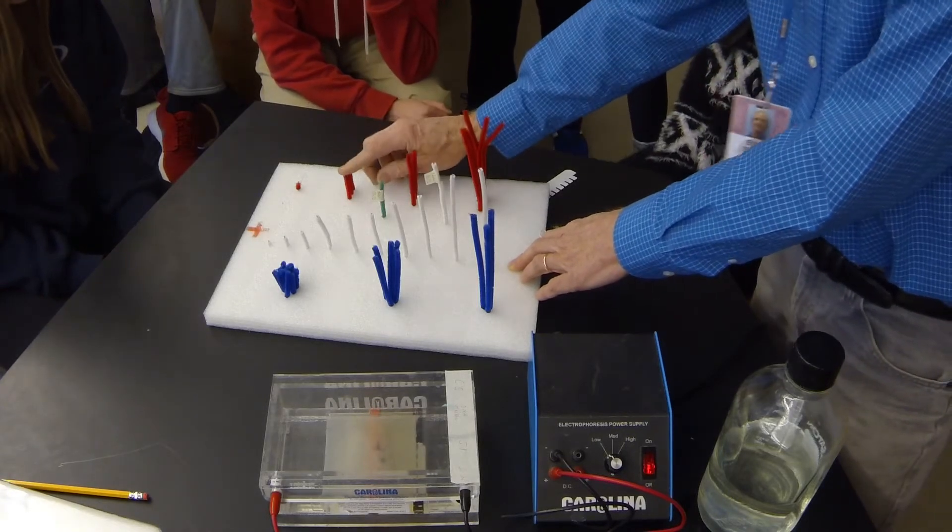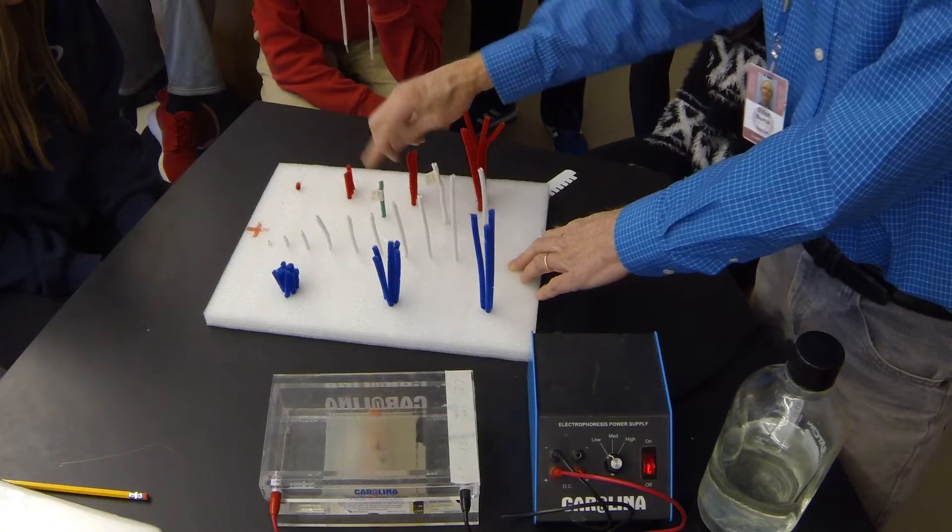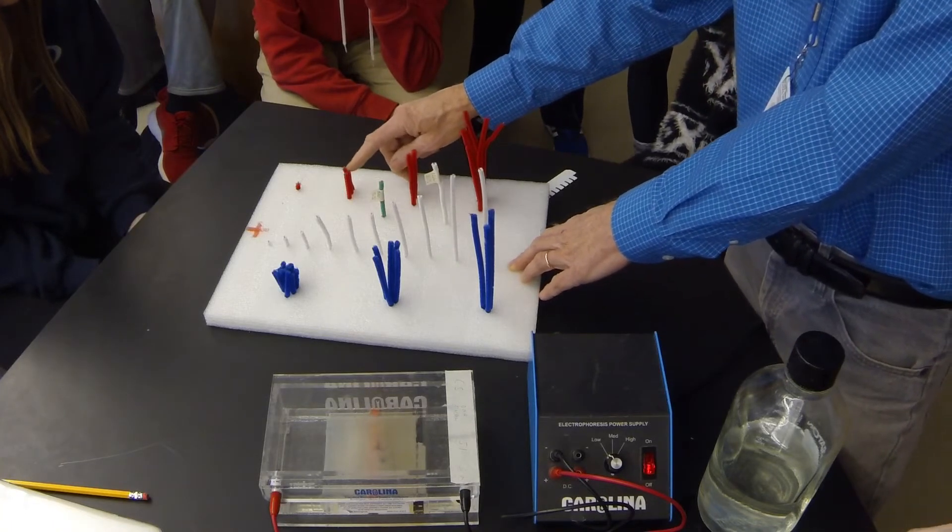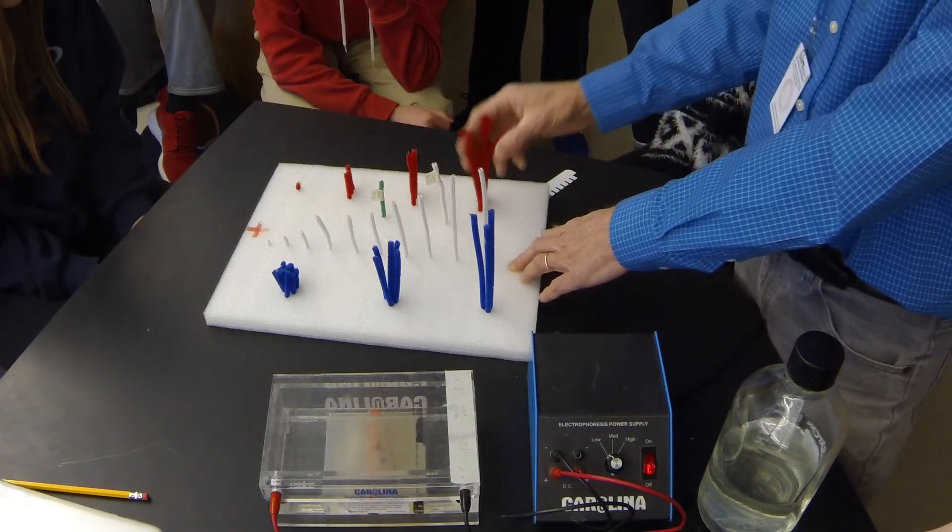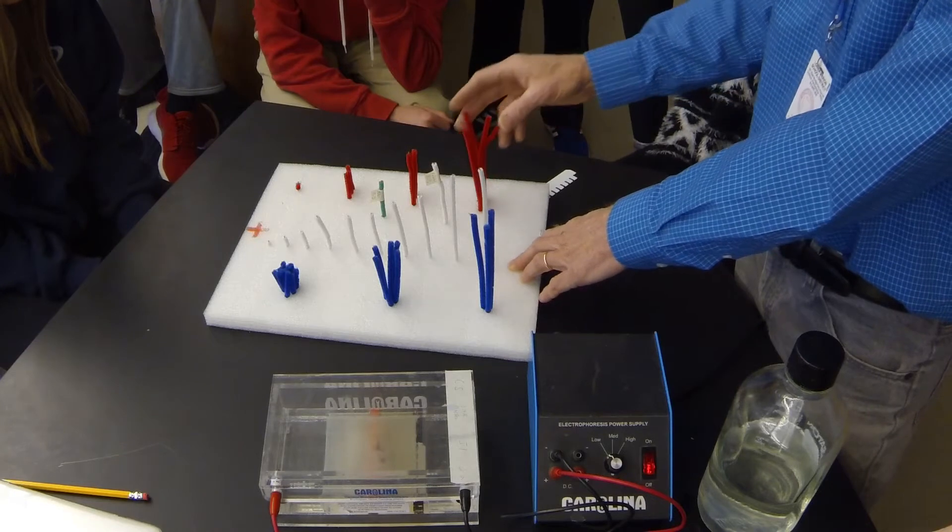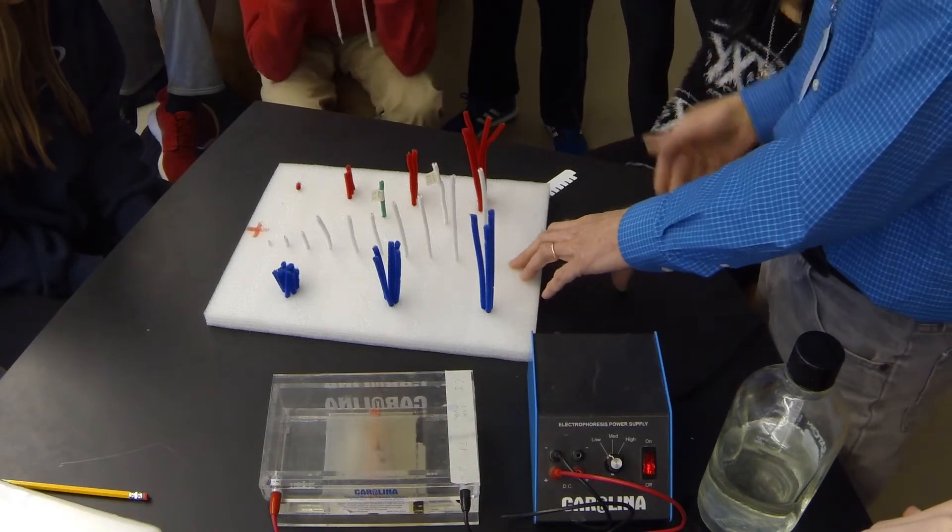These went further than the 800, and based on how much further, you could conclude that these maybe have a size of about 600, whereas these didn't go as far as the 1200, so maybe they're like 1400. So those three things help determine your DNA fingerprint.